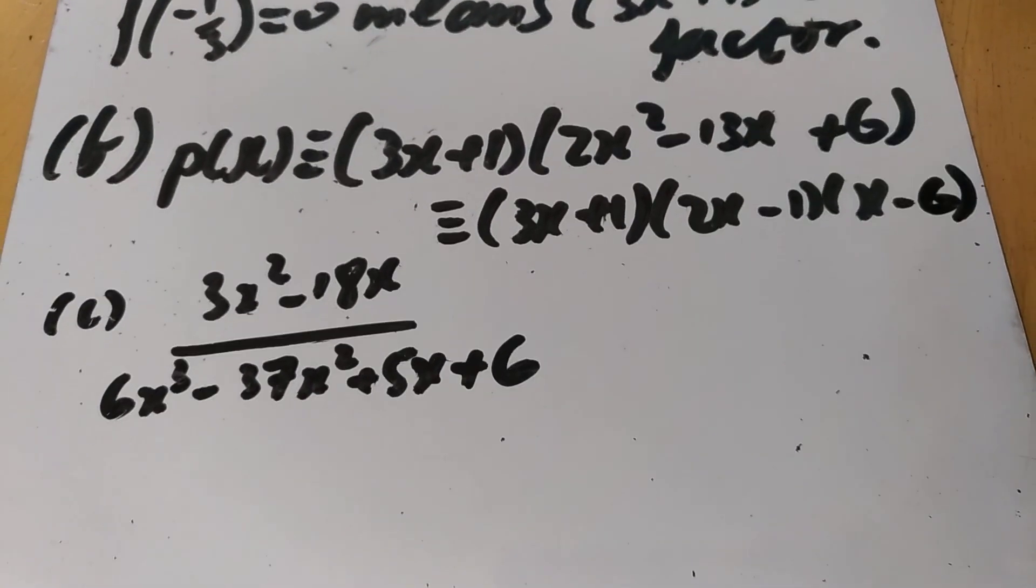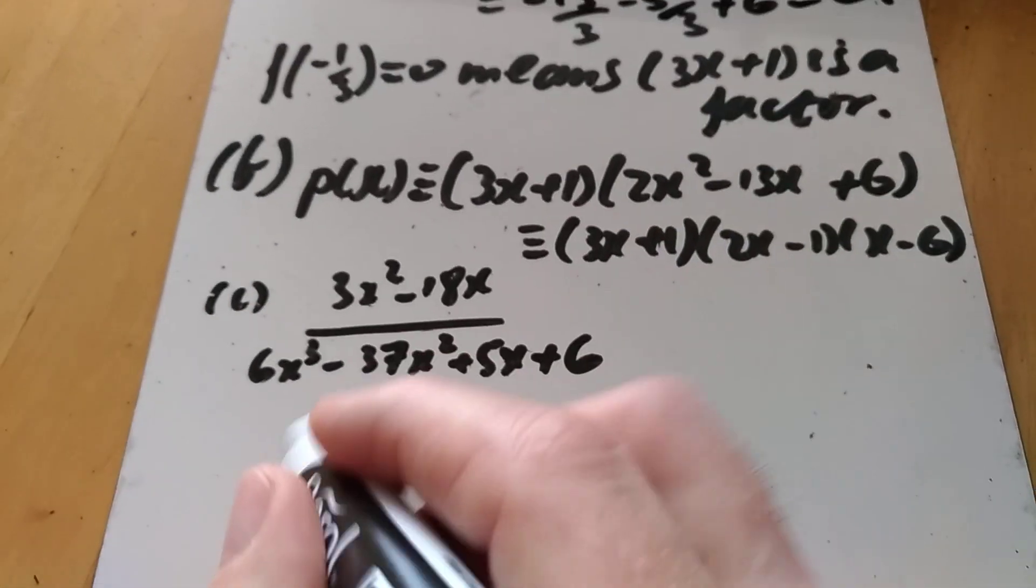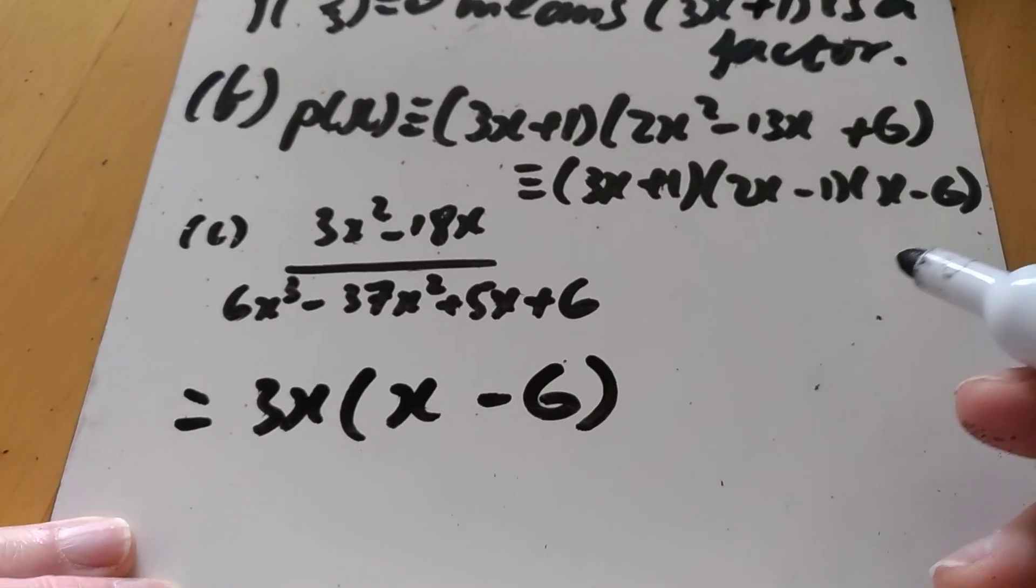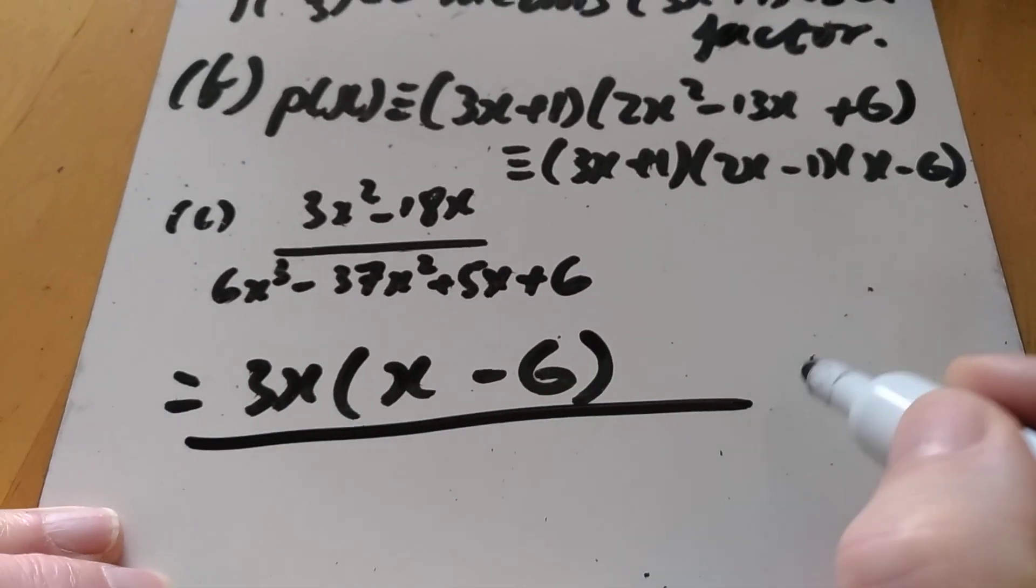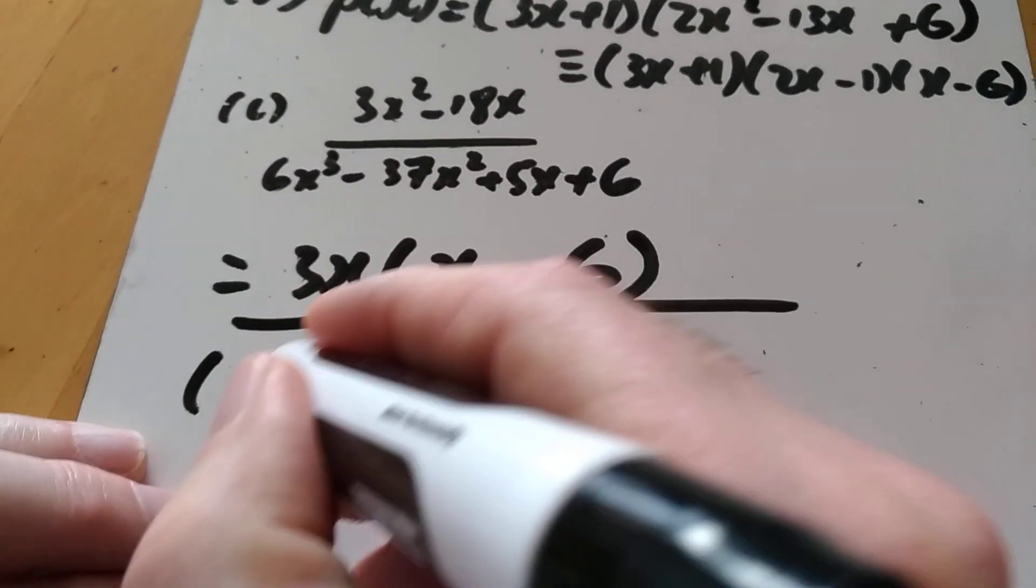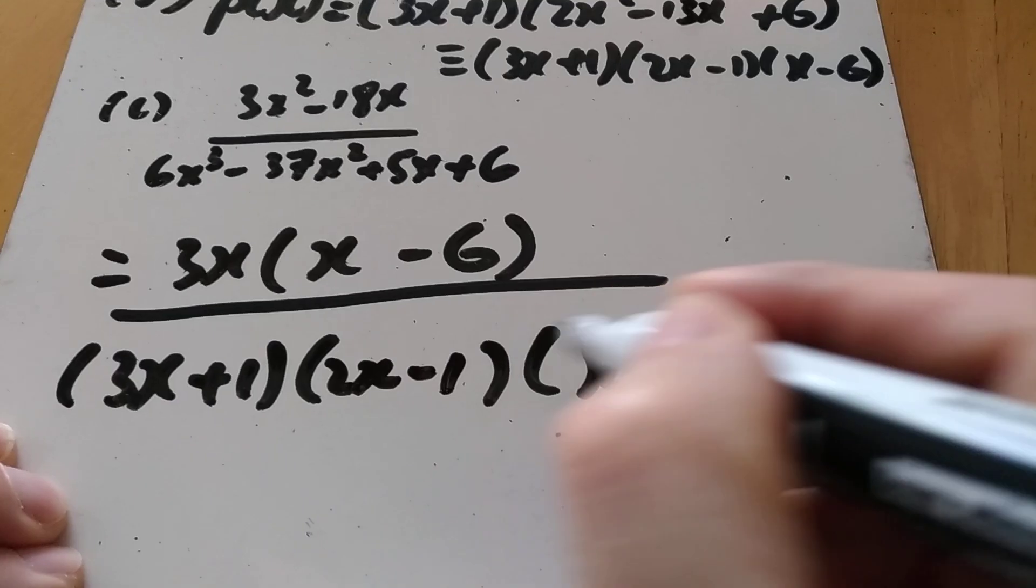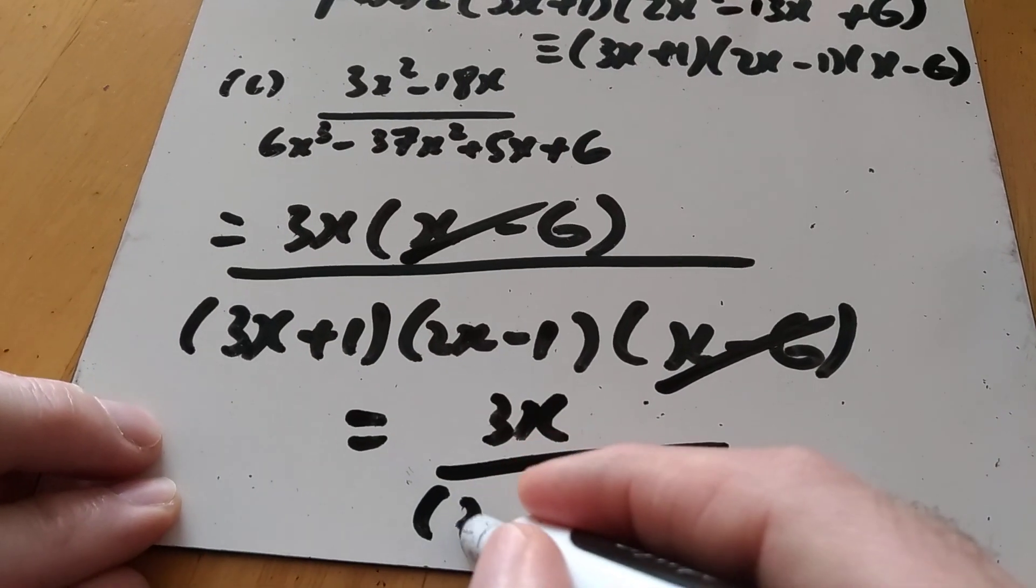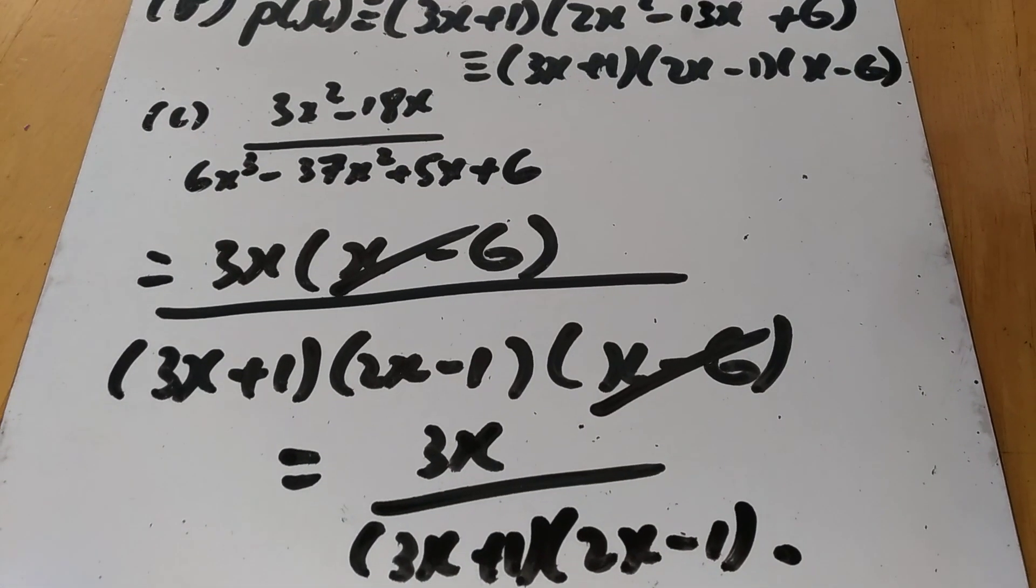I'm sort of looking ahead, because I've looked at part c, and it wants me to simplify this mess of a fraction here. So I'm expecting the top, I'm going to factorise that, to be this. Take out the 3 and take out the x, I'm left with x minus 6. The fact that you want me to simplify it, I'm sort of expecting one of the brackets for that p to have been x minus 6. That's why when I was looking to factorise there, I could sort of anticipate what's going to happen there. And my answer is 3x over 3x plus 1, 2x plus 1. And that's factor theorem and remainder theorem.